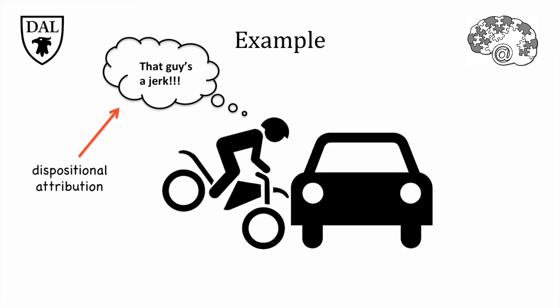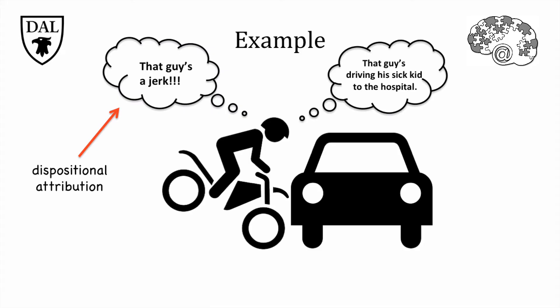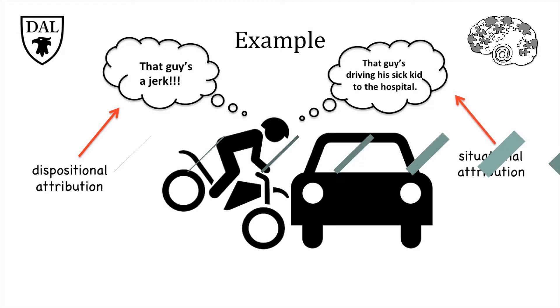Or rather, do you explain his behavior by looking at factors outside of his personality — considering that he might have an emergency situation that requires him to drive fast and furious to help someone? If this is where your mind takes you, you've made a situational or external attribution.